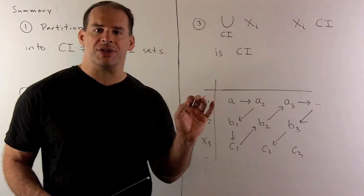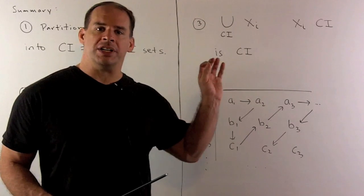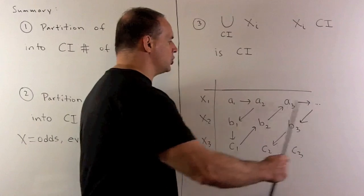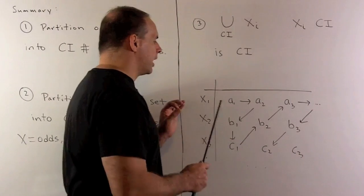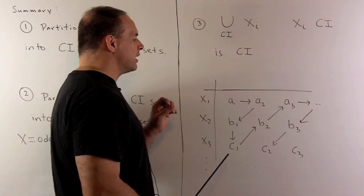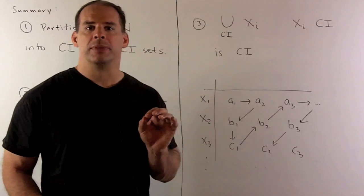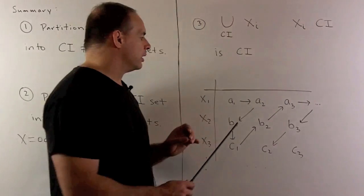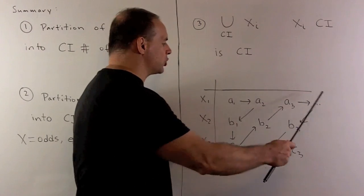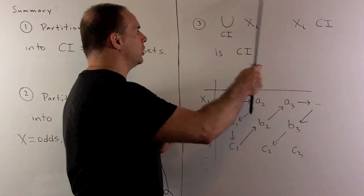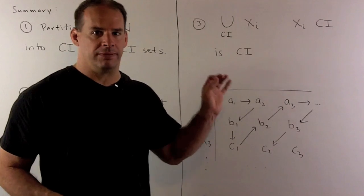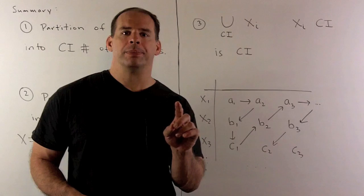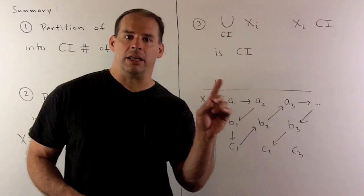We just use our process from before: for each X sub i, take the elements, form a sequence that we put along each row, and set up the zigzag pattern as before. That gives us a new sequence going through every element from each X sub i, providing a one-to-one correspondence between our union and the natural numbers — so the result is countably infinite. Of course, we can remove the disjoint property; that'll just be bookkeeping I'll leave to you.